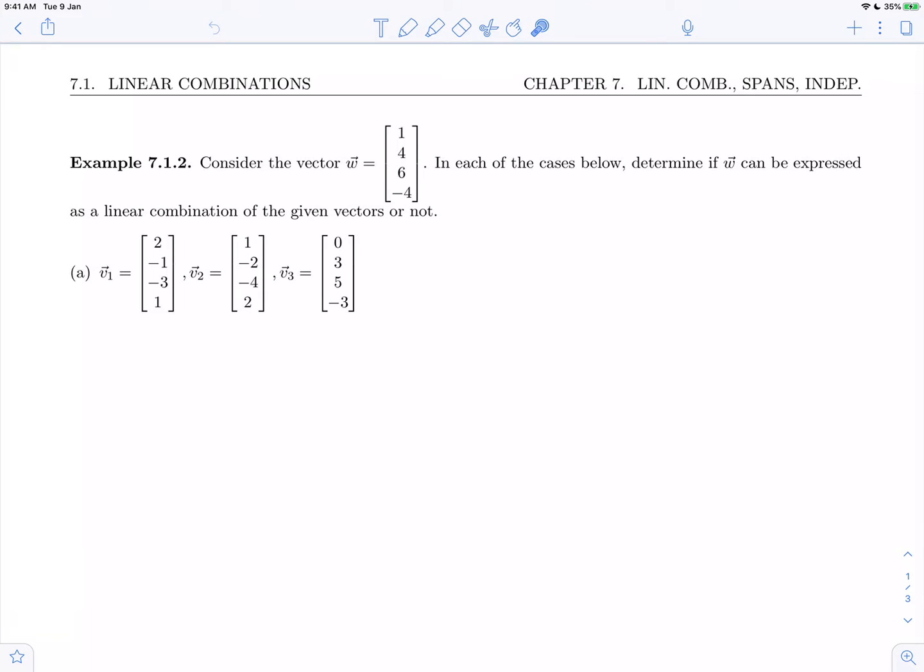Welcome back to section 7.1 on linear combinations. In this video we're going to do example 7.1.2 where we are asked to consider the vector w given as 1, 4, 6, minus 4. In each of the two cases below, a on this page and b on the next page, we're asked to determine if w can be expressed as a linear combination of the given vectors or not.